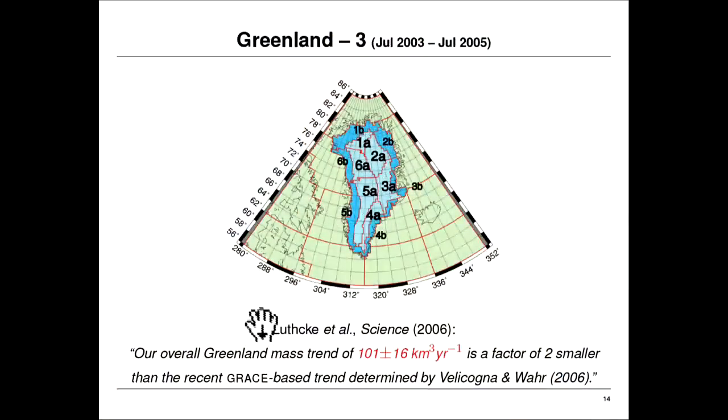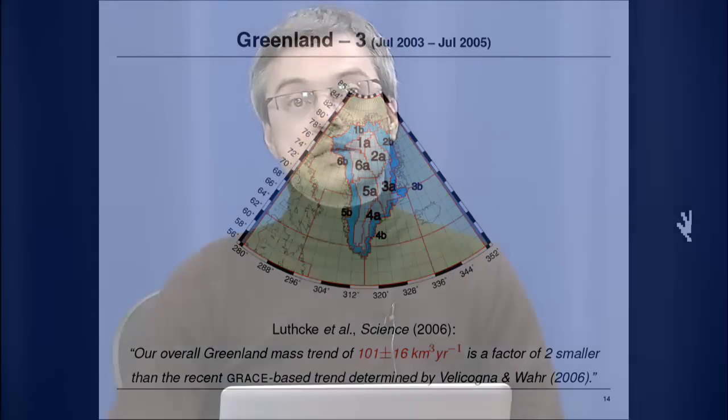A third 2006 paper used yet another method — a judicious projection of the signal into individual hydrological basins — and concluded with a total of about 100 gigatons per year in roughly the same observational epoch. That number, as the authors noted, is a factor of two smaller than the GRACE-based trend determined in the same year by Velicogna from the same data. You can also see that the uncertainties don't overlap. So around 2006, it was clear that GRACE's view of mass loss over Greenland was so uncertain that from the same data with different techniques, people came up with values a factor of two or more different.